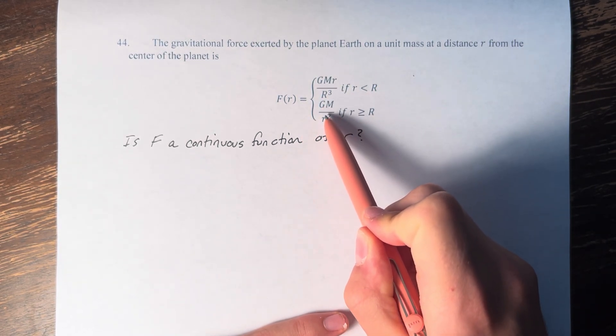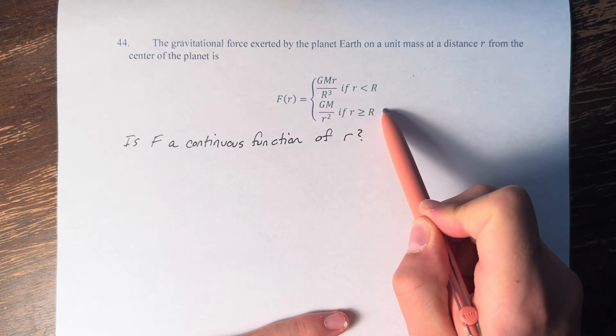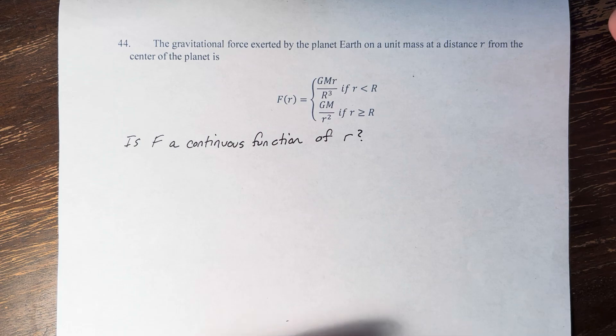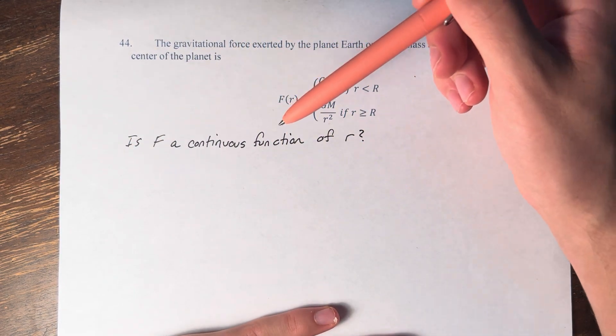and GM over r squared if little r is greater than or equal to big R. And what we're asked is, is F a continuous function of r?